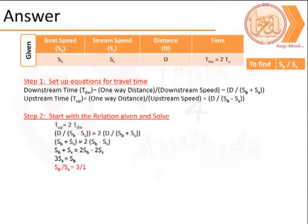We attempt to solve the problem beginning with the information given to us. Let us assume that the speed of the boat is sb, the speed of the stream is ss, the distance travelled one way is D, and the time to go downwards is 2 times the time to go upstream. That is tdw equals 2 into tu.